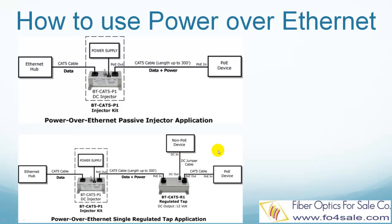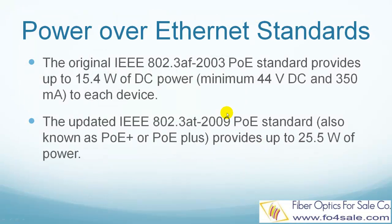There are two versions of Power over Ethernet standard made by IEEE. The original IEEE 802.3af 2003 standard provides up to 15.4 watts of DC power to each device. The updated IEEE 802.3at 2009, also known as PoE Plus, provides up to 25.5 watts of power.